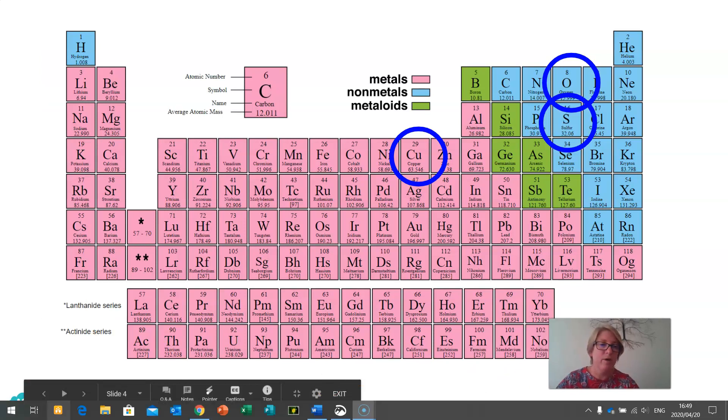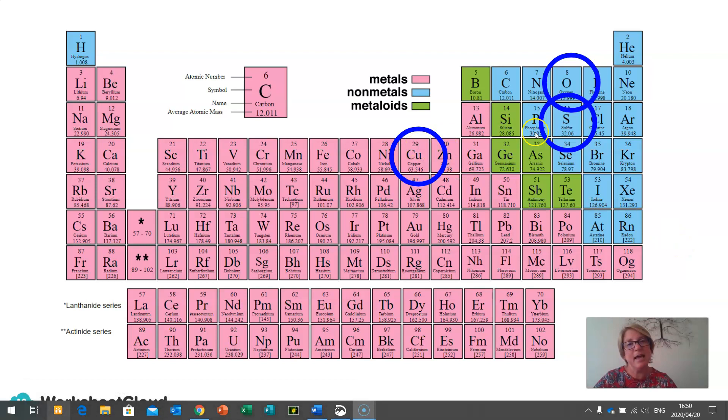So here we have a periodic table and I'm just highlighting the elements that we are going to be covering today: copper, sulfur, and oxygen.